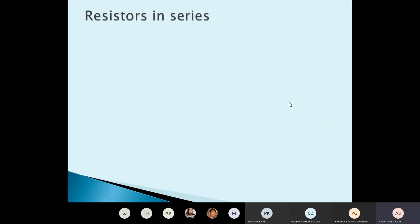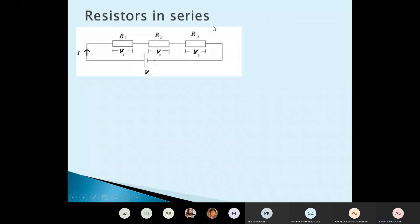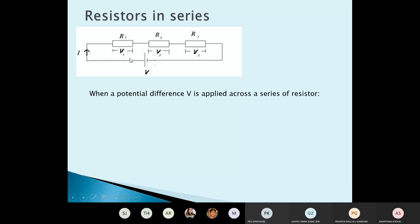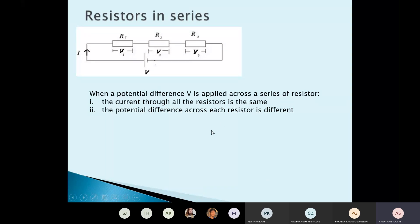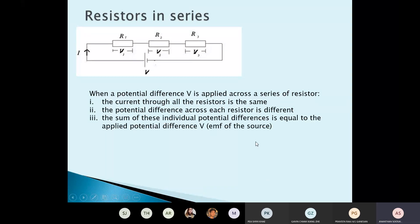These two laws are used to find the resistors formula — resistors in series. For resistors in series, the current through all the resistors is the same. The potential difference across each resistor is different, and the sum of all individual potential differences is equal to the EMF. That uses Kirchhoff's second law.